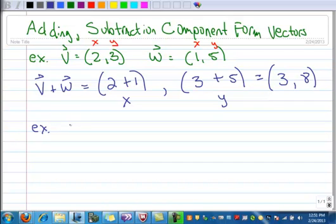So here I've got another example. I've got vector v in this case is 1, 1, and vector w in this case is negative 3,